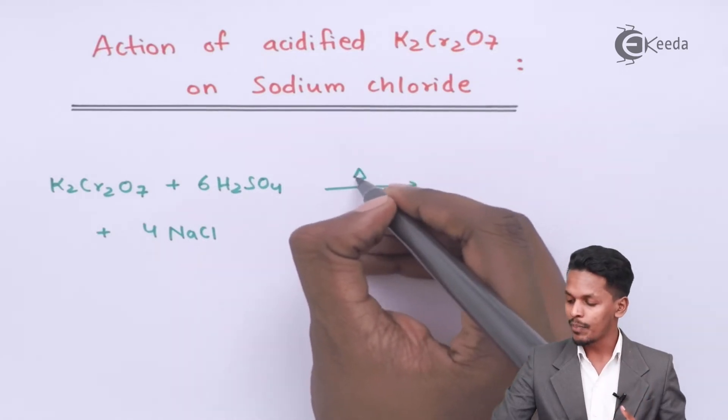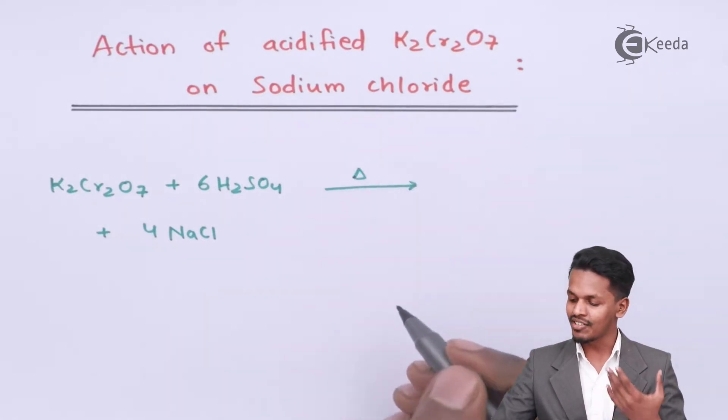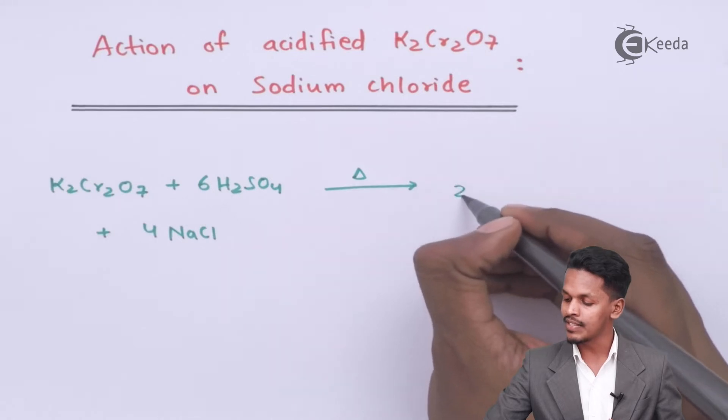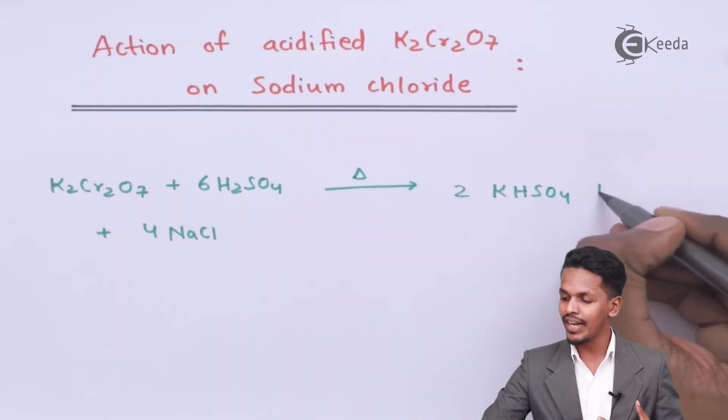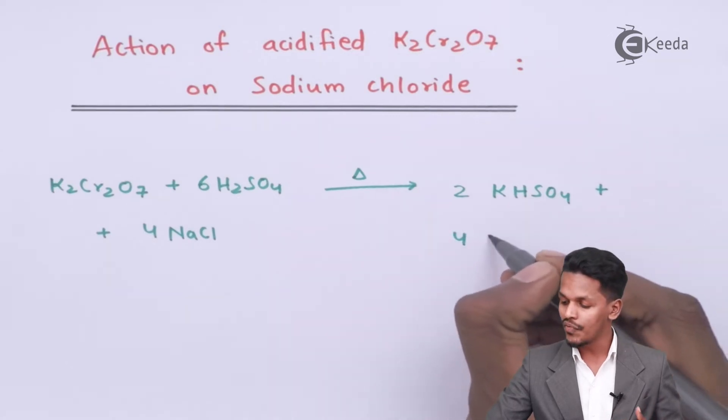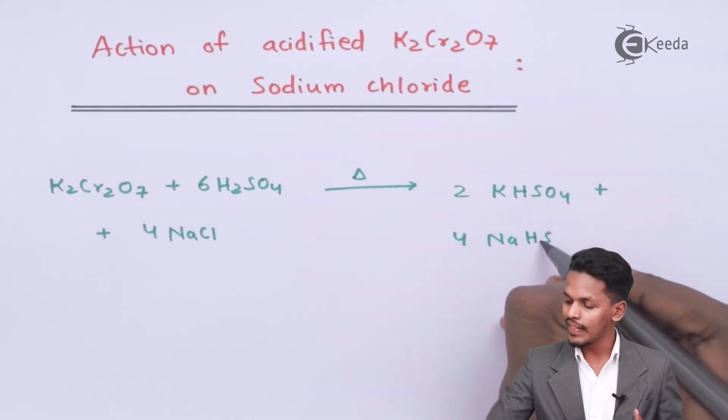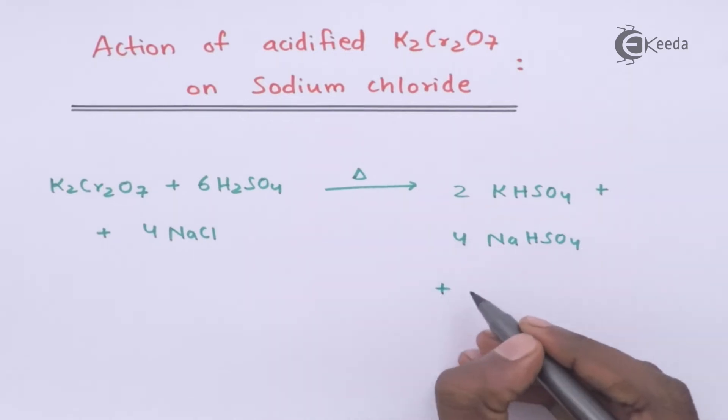The reaction proceeds by providing a particular temperature to it. The products that we could get are 2 moles of KHSO4, that is potassium hydrogen sulfate, along with 4 moles of NaHSO4, that is sodium hydrogen sulfate, and the main product that we could get over here is...